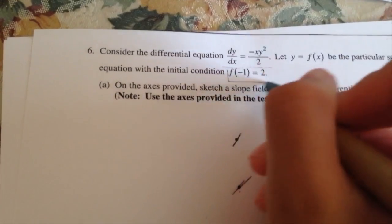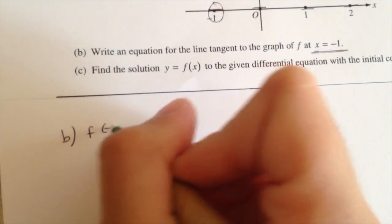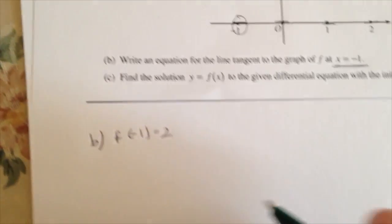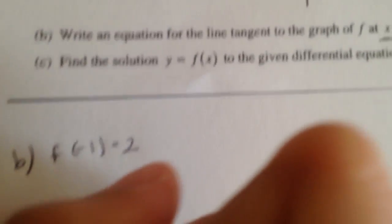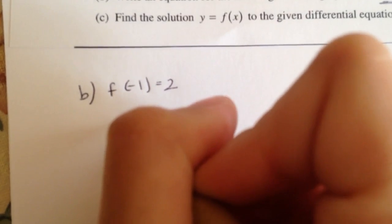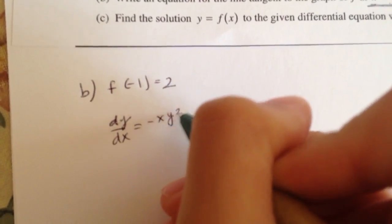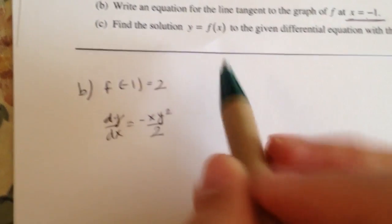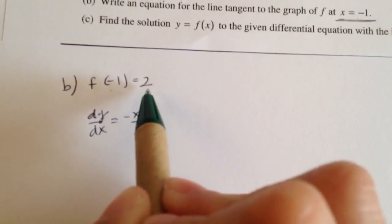So we're going to use this one, this initial condition. f of negative 1 equals 2. So I'm going to use the equation that I'm giving to you, the differential equation. dy over dx equals negative xy squared over 2. And then you just plug in these values. x is negative 1 and y is 2.